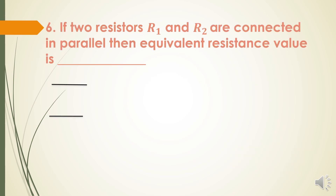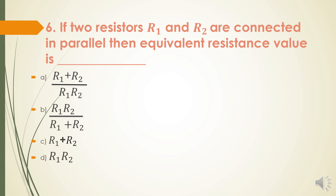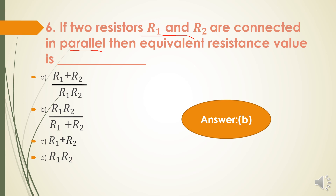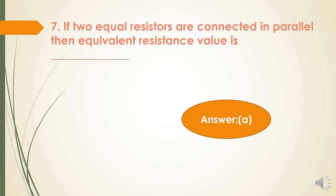Next question: If two resistors R1 and R2 are connected in parallel, then the equivalent resistance value is? The options are: R1+R2 / R1R2; R1R2 / R1+R2; R1+R2; or R1R2. For two resistors in parallel, the equivalent resistance is R1R2 / (R1+R2). The answer is option B. Next question: If two equal resistors are connected in parallel, both having the same resistance value R, then the equivalent resistance is R/2. The answer is option A.